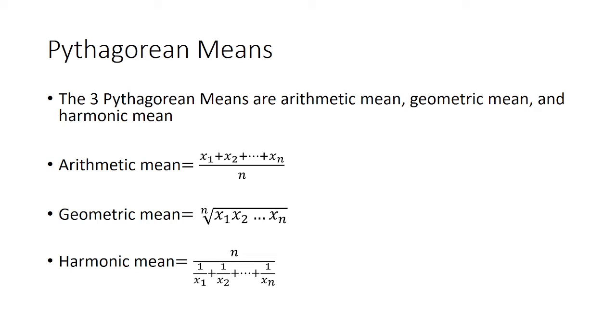And the harmonic mean is the total numbers divided by the sum of 1 over each of the numbers.